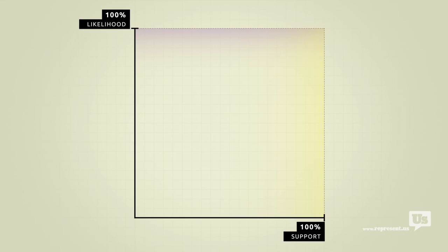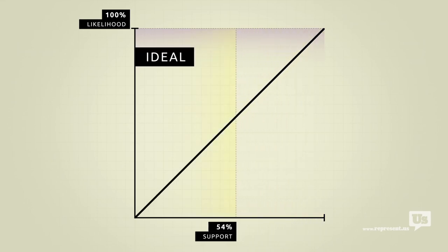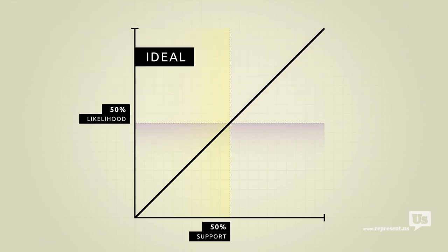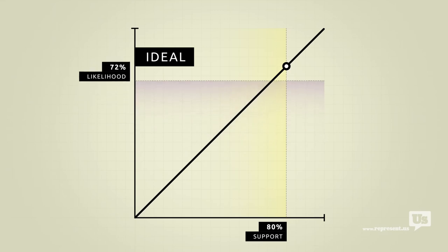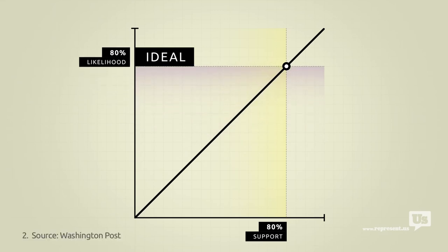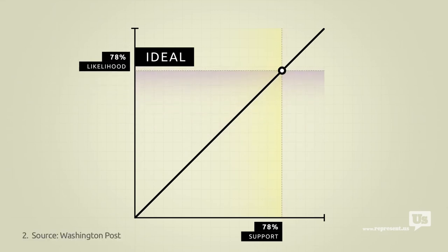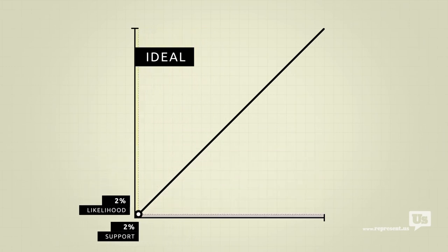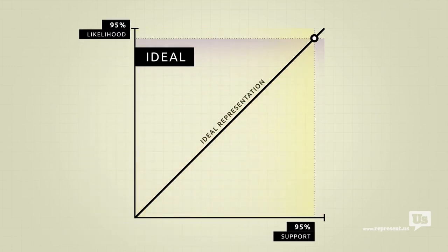On this graph, an ideal republic would look like this. If 50% of the public supports an idea, there's a 50% chance of it becoming law. If 80% of us support something, there's an 80% chance. You get the idea. Now, most Americans would probably agree that, with a few exceptions, we should be as close to this ideal as possible.